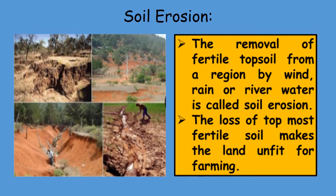Soil Erosion. The removal of fertile topsoil from a region by wind, rain or river water is called soil erosion. The loss of topmost fertile soil makes the land unfit for farming.